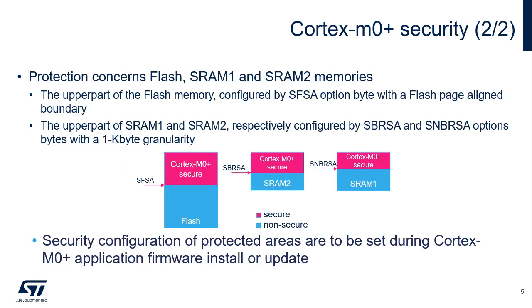Cortex-M0 Plus security protects upper parts of Flash, SRAM1, and SRAM2 memories. The size of each area is to be set during Cortex-M0 Plus application firmware installation or update. Secure Flash Start Address, or SFSA, is the lower boundary of protected Flash memory, aligned on Flash page granularity. Secure Backup RAM Start Address, or SBRSA, for SRAM2, and Secure Non-Backup RAM Start Address, or SNBRSA, for SRAM1, are the respective lower addresses of the protected parts of SRAM2 and SRAM1 memories. Size can be set with a granularity of 1 kilobyte.